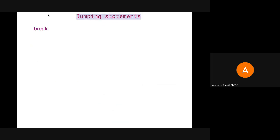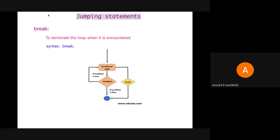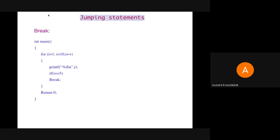Next is jumping statements. The first is break. Break is used to terminate a loop when it is encountered. The syntax is simply the keyword break followed by a semicolon. As shown in the flowchart, if a break statement is executed, all the remaining iterations are skipped and control moves outside the loop. Here we have a for loop running from 1 to 9, printing the value of i. If the value of i becomes 5, we break. So the output shows only the first four numbers; when i becomes 5, it exits the loop and other numbers don't get printed.